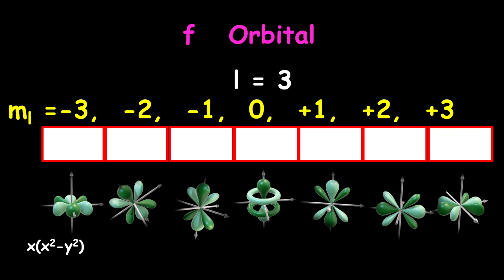There is a possibility of the product of x and x-square minus y-square, the product of y and x-square minus z-square, xz-square, z-cube, yz-square, xyz, and a possibility of orientation of the product of y and 3x-square minus y-square. These are the unique pattern and orientation of electrons along the f-orbital.